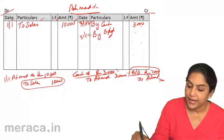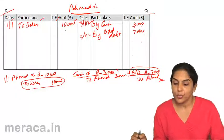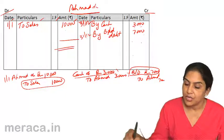By bad debt. How much? 7,000. With this, Ahmad's account is closed.